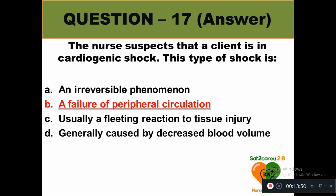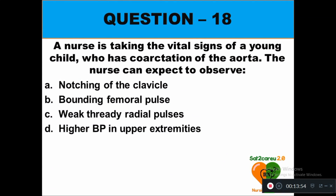Question 18: A nurse is taking the vital signs of a young child who has coarctation of the aorta. The nurse can expect to observe: option A notching of the clavicle, option B bounding femoral pulse, option C weak thready radial pulses, option D higher BP in upper extremities. The right answer is option D — higher BP in upper extremities is expected in a child with coarctation of the aorta.